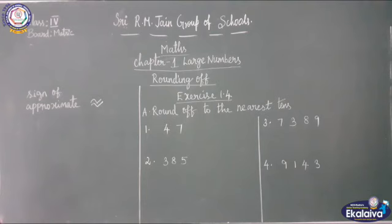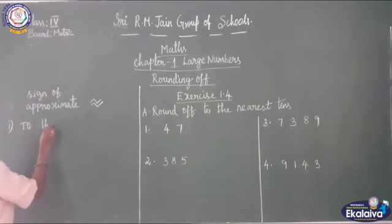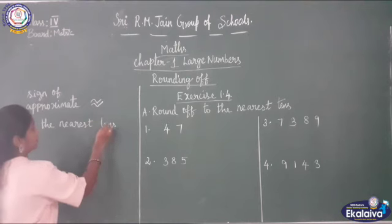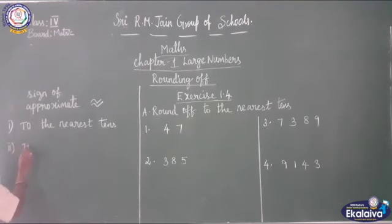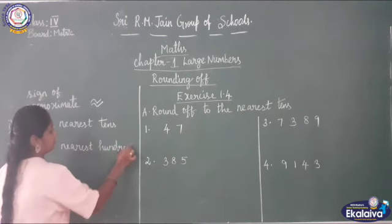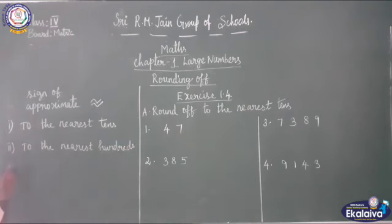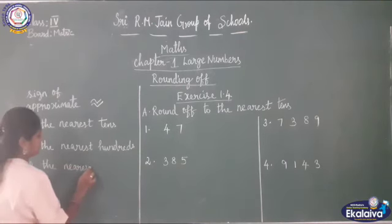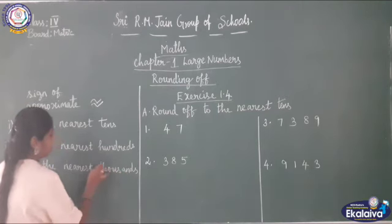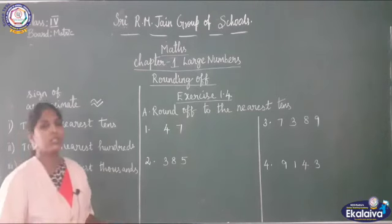In this class we are going to do round off to the nearest tens, round off to the nearest hundreds, and third, to the nearest thousands. You will understand better when we do the sums.